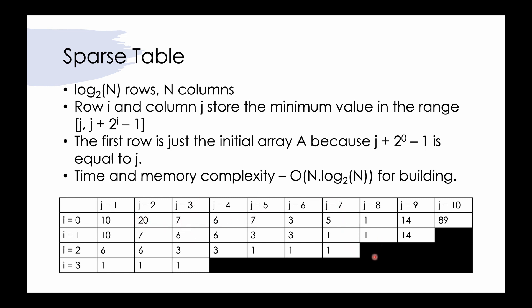The blank cells are blank because, for example, at i equal to 1 and j equal to 10, if we try to store the minimum value for two cells starting at j equal to 10, we wouldn't be able to do that as we'd have to go outside the array. So we see that we have log n rows and n columns, making this table O(n log n).